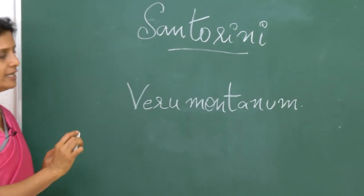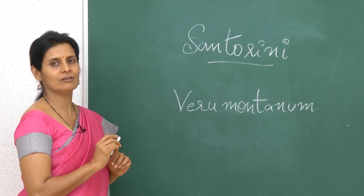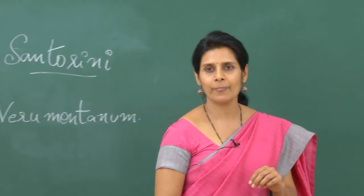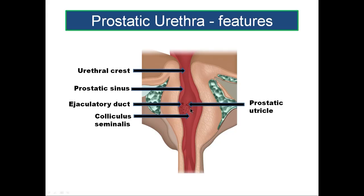The verumontanum, or colliculus seminalis, is a rounded projection on the posterior wall of the prostatic urethra. On the middle of the verumontanum you find the opening of the cul-de-sac — the prostatic utricle. On either side of the prostatic utricle you will find the openings of the ejaculatory ducts: center is the prostatic utricle opening, and on either side are the openings of the ejaculatory ducts.